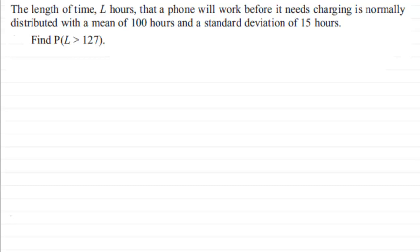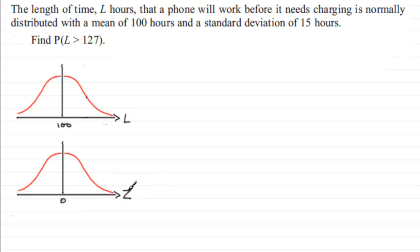Right, well the first thing I'd want to do is just sketch the normal distribution for L, and underneath it I've got the standardized distribution Z. Now let's just put down that L is distributed normally with a mean of 100 and the second parameter is the variance, which will be the standard deviation squared, 15 squared.